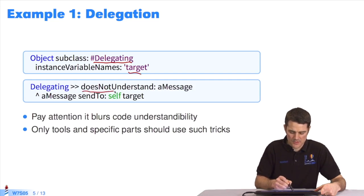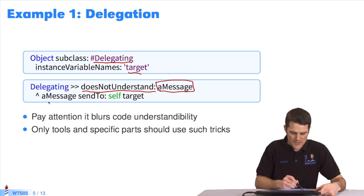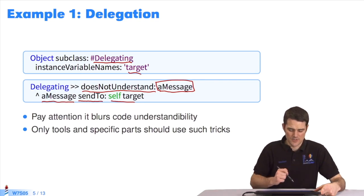I redefine the doesNotUnderstand method. It takes the object, a message as a parameter, containing the failed message selector. Then I can ask this message to resend itself. I use sendTo:selfTarget, which is the instance variable. I resend the message to another object.